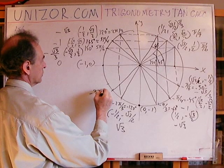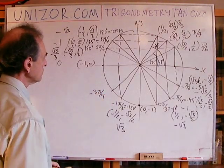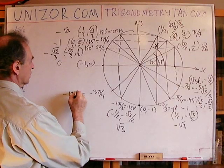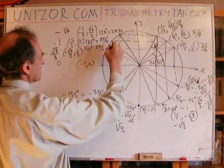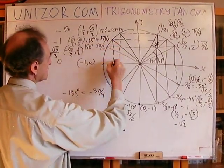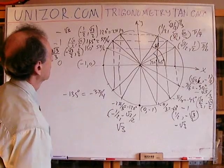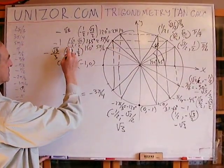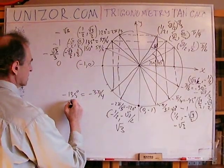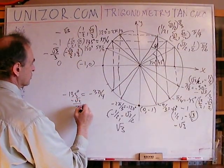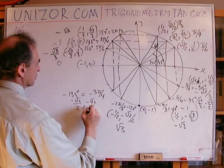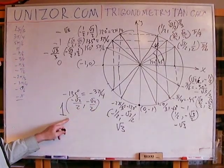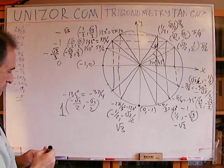Next is −3π/4, which is −135 degrees. By symmetry with +3π/4, I retain the abscissa and change the sign of the ordinate: (−√2/2, −√2/2). The ratio of these is 1. So the tangent of this angle is 1.